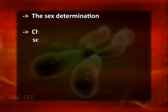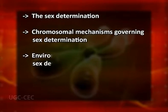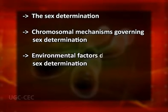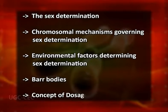The main objectives of the present module are outlined below: 1. To give a general and thorough idea about sex determination. 2. Explaining in detail the Chromosomal Mechanisms Governing Sex Determination. 3. Giving a precise account of the environmental factors determining sex determination. 4. To give a general and thorough idea about Barr Bodies. 5. Explaining in brief the concept of Dosage Compensation.